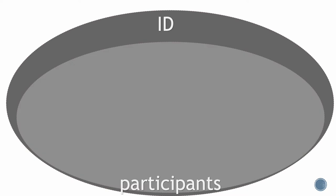We start by saying that every party will have an identity from some ID space — you can consider this to be either the set of all IP addresses, or all possible public keys in some public key signature scheme. Then over the course of an execution, the set of participants will come online, each assuming some unique identity, and you can consider the set of participants to be every party that sends or receives a message during the execution.